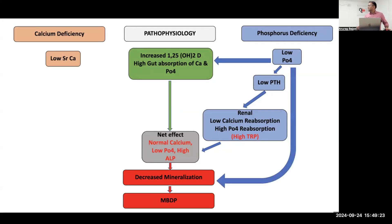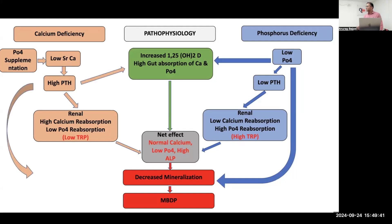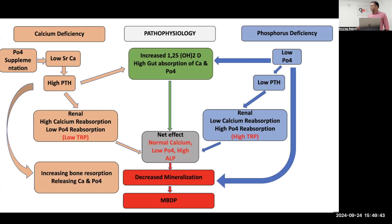If there is low calcium, PTH will be high. High PTH leads to increased renal calcium resorption and low phosphorus resorption — so TRP will be low. High PTH also leads to increased gut absorption and increased bone resorption. The net effect is the same: normal calcium, low phosphorus, high ALP, and ultimately metabolic bone disease of prematurity.